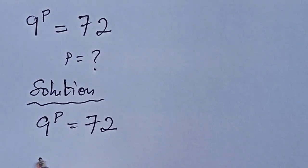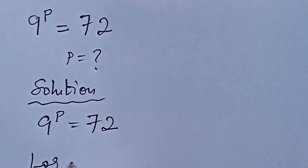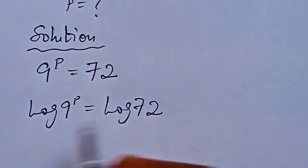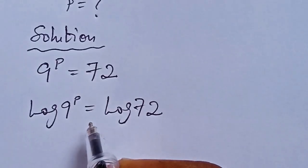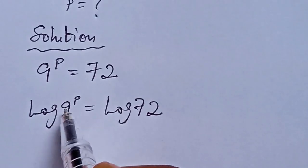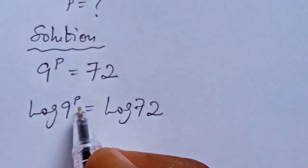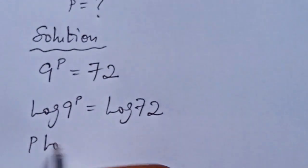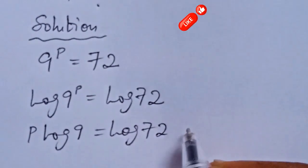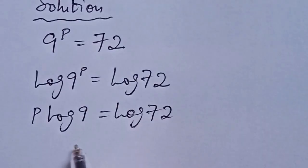The first thing we need to do is take the log of this expression on both sides: log of 9 to the power of p equals log 72. Now, according to the logarithmic rule, if we have a log of an expression with a power, that power can be moved down to the base. So p comes down and we have p log 9 equals log 72.